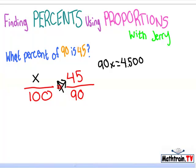And then you divide. So, 4,500 divided by 90 is 50. And that's right here.